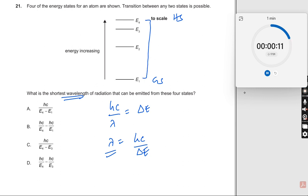You see, the difference between these two is small, these two is small. Only this is much larger. Therefore, the answer should be hc divided by E4 minus E1. Which one is it? Option D.